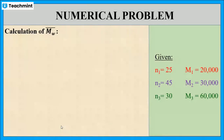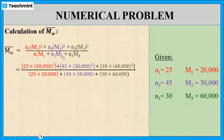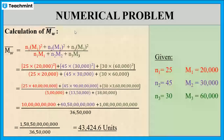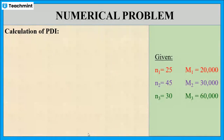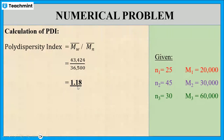Next, we have to calculate Mw bar. The formula is: Mw bar equals N1·M1² plus N2·M2² plus N3·M3², whole divided by N1·M1 plus N2·M2 plus N3·M3. Substituting all values, the final answer is 43,424 units. Then the polydispersity index can be calculated by dividing Mw bar by Mn bar: 43,424 divided by 36,500, and its value is 1.18. This value should always be greater than or equal to 1.